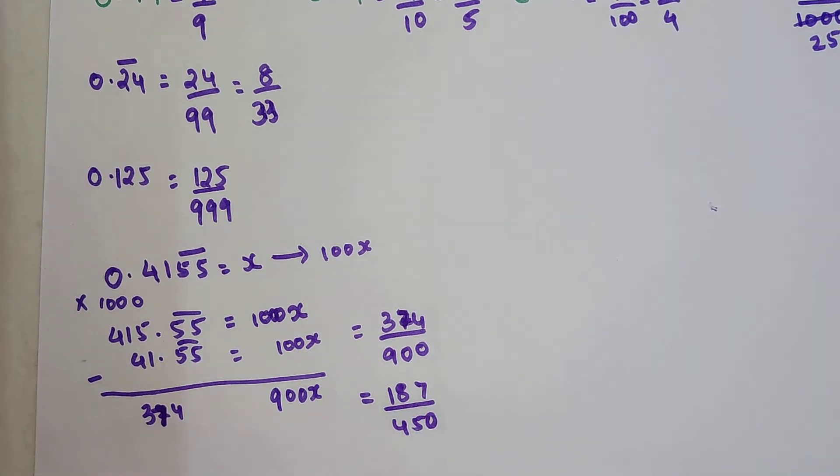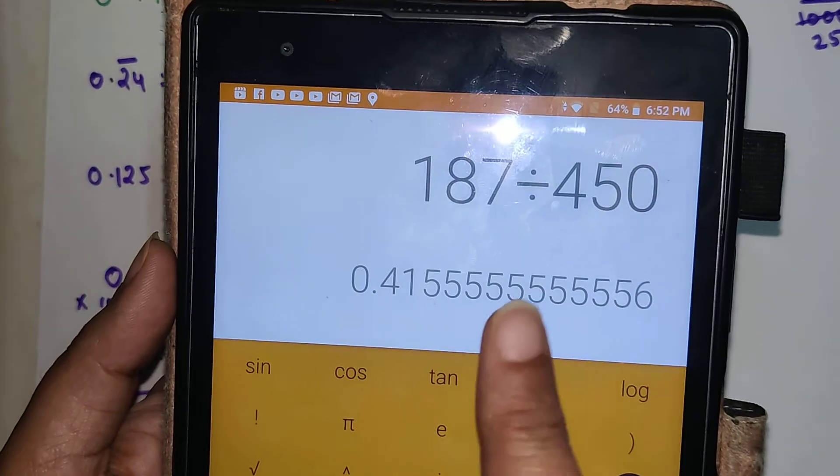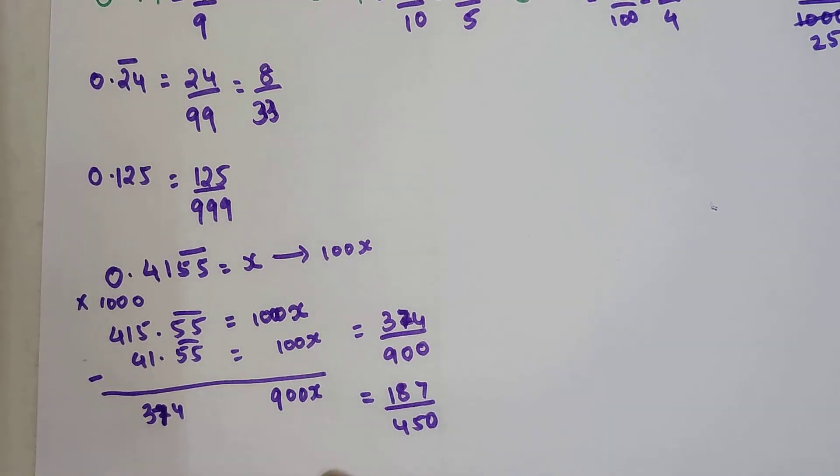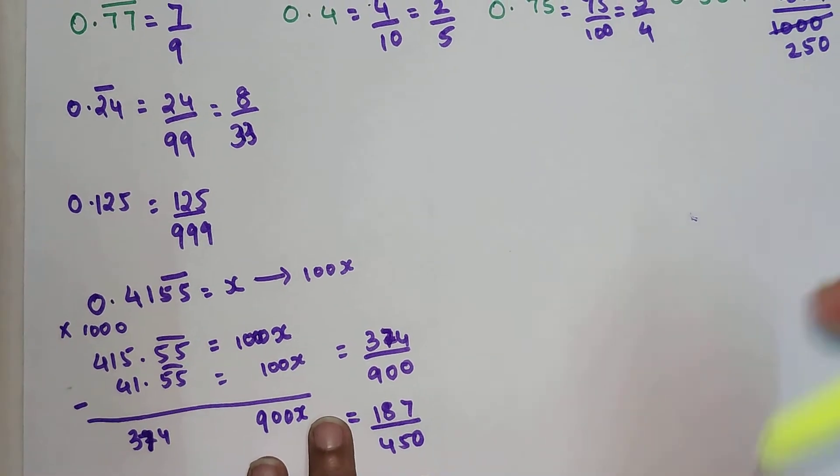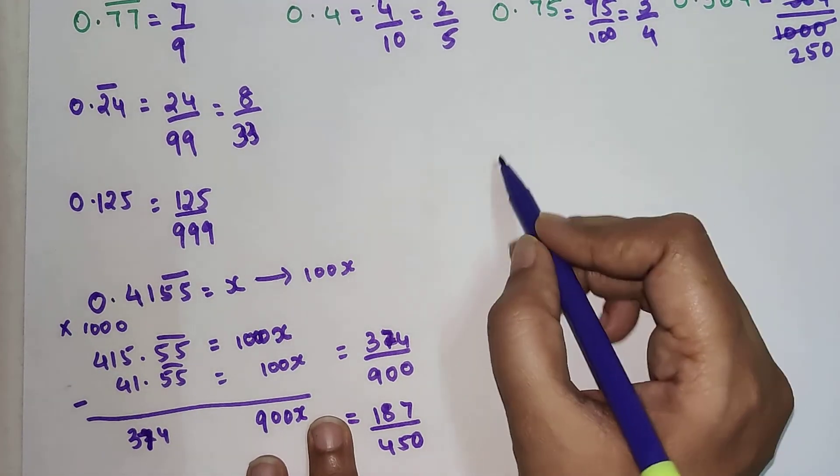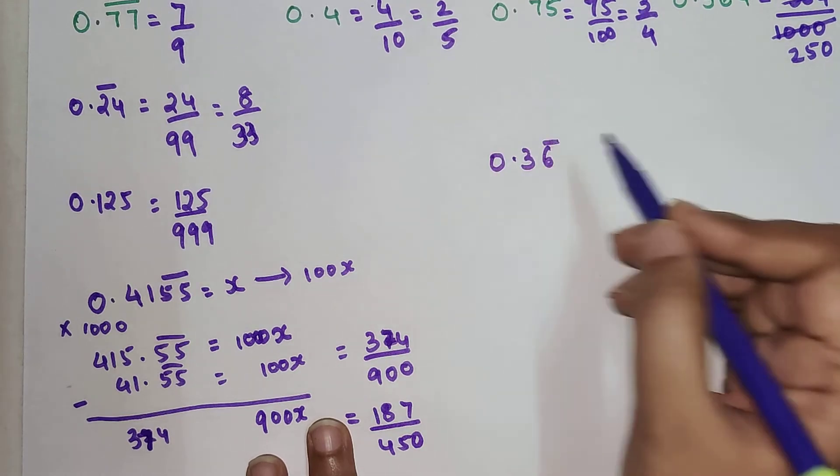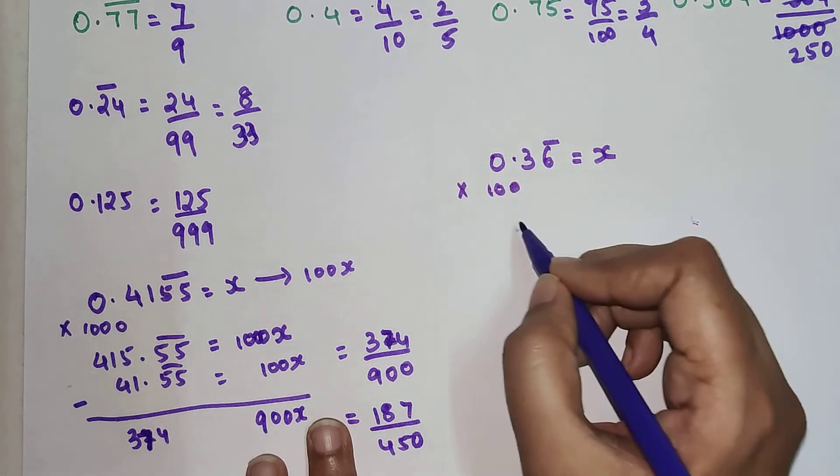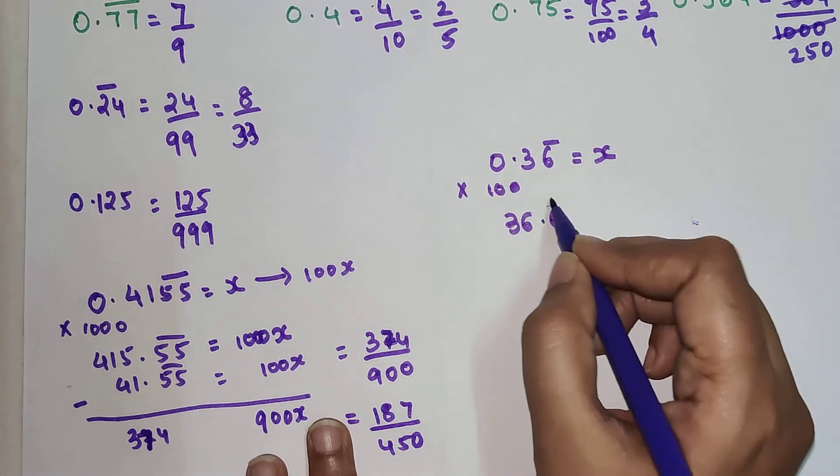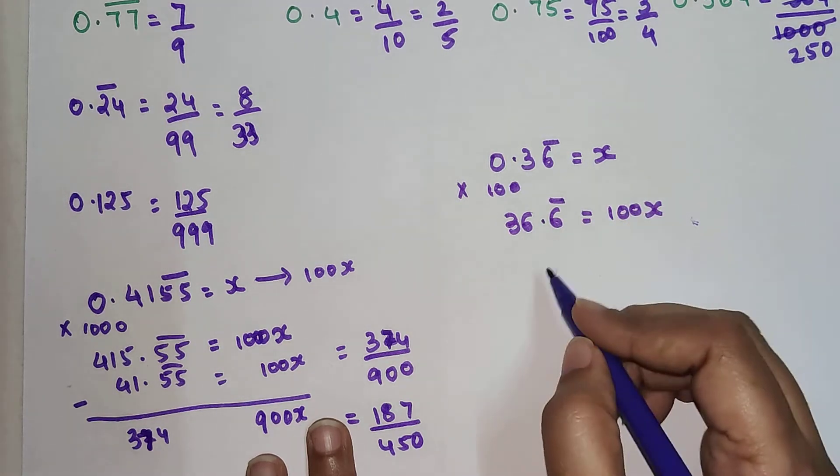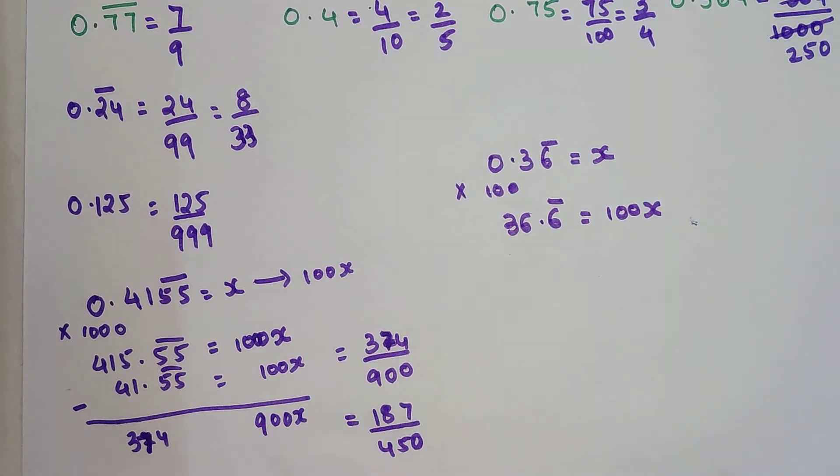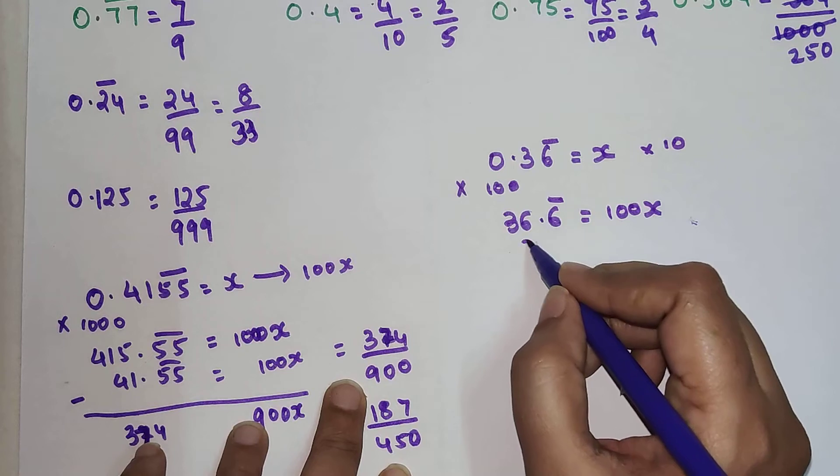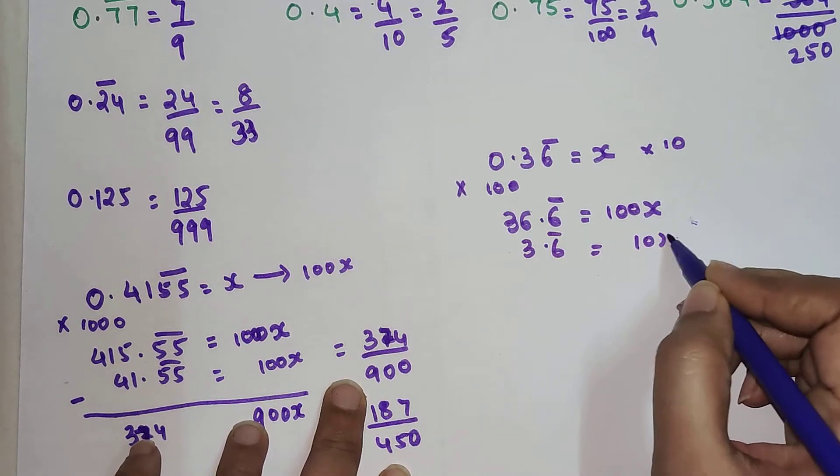If you want, we can just have a look with the calculator. So 187 divided by 450 gets you the answer 0.4155555. Similarly, let's try for something like this. If we have only one number and the next number is repeating, we will make this x. The next part will be multiply both sides by 100, so we will get 36.6 which is recurring, and this is going to be 100x. Similarly, we will multiply this again with 10. So we will get 3.6 recurring, and this will be 10x.